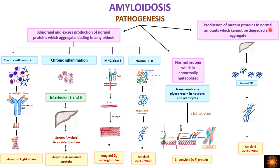The third category is the production of mutant proteins in normal amounts which cannot be degraded and form aggregates. This is seen when mutant transthyretin molecules are produced — the mutant transthyretin cannot be dissociated, so it accumulates and produces amyloid fibrils. These are the three types by which amyloid fibril protein is produced.